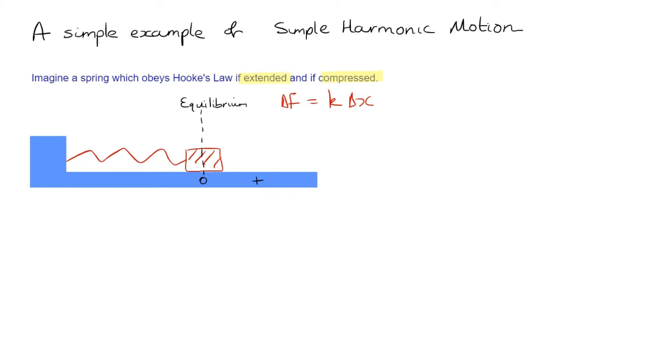And if I compress it, we're going to call that a negative displacement. Now, we can choose which way round we do that, but for this example, it would be really useful to do it that way. It's also going to be really useful to write down Hooke's Law in a slightly different form. So instead of putting F equals KX, we're going to write it as F equals minus KX.